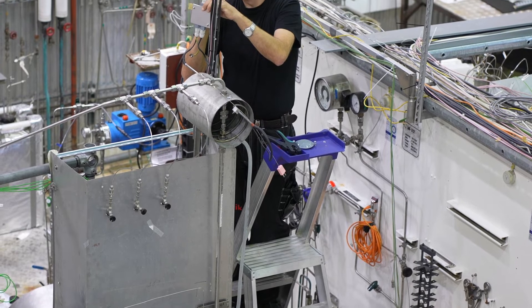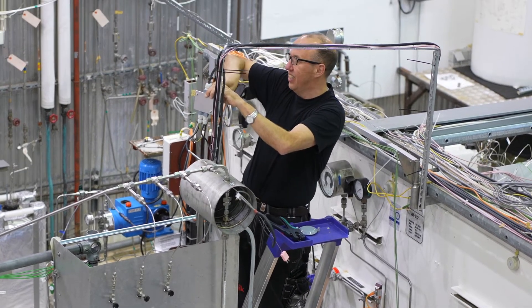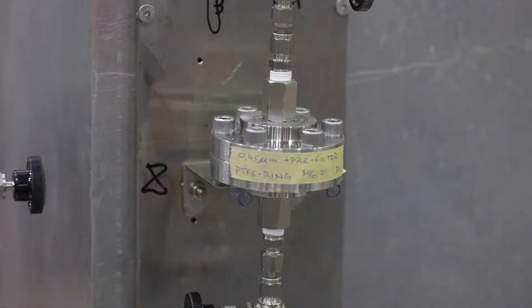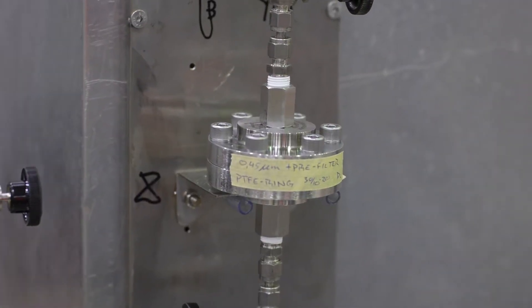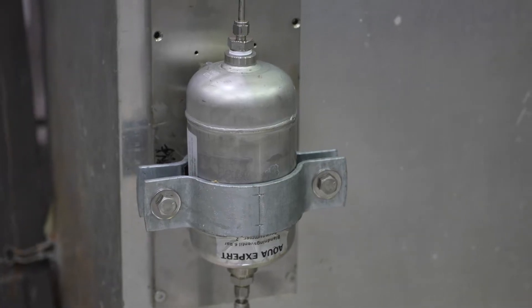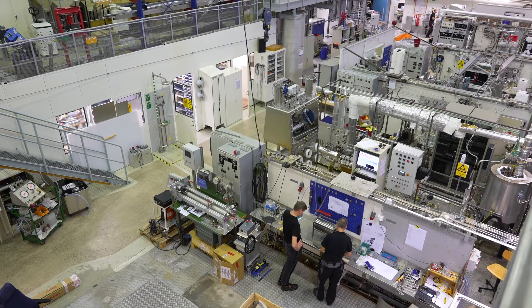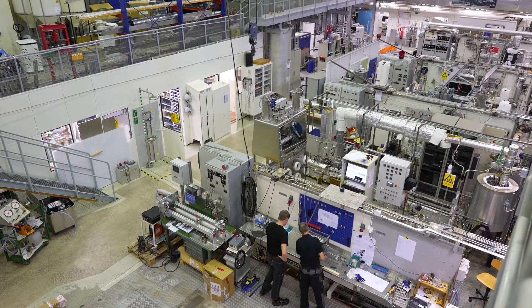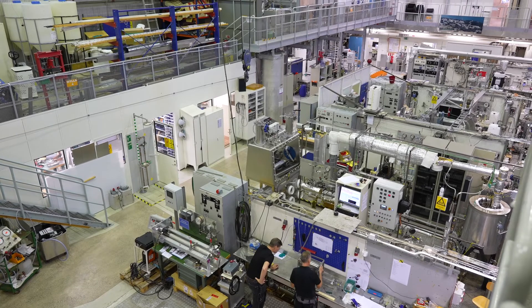Various corrosion, material integrity, and water chemistry issues related to nuclear power plants are studied. For example, initiation and growth of stress corrosion cracking, activity buildup, and CRUD-induced power shift from various water chemistry effects are studied in the laboratory.